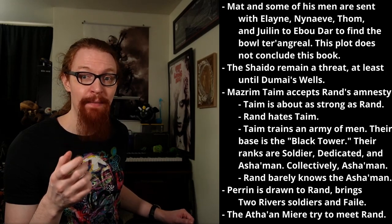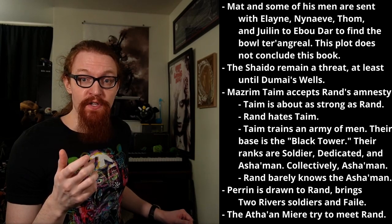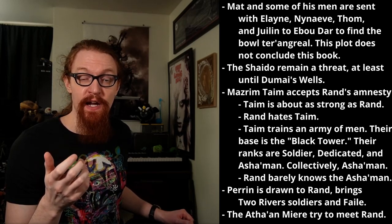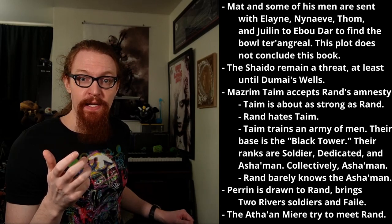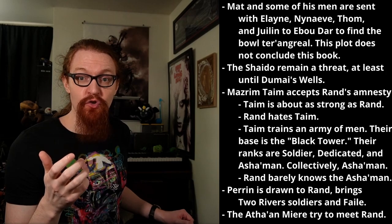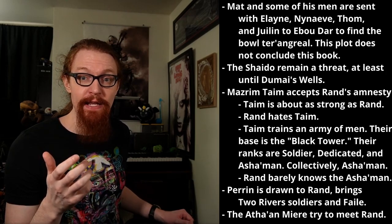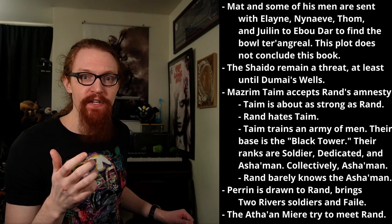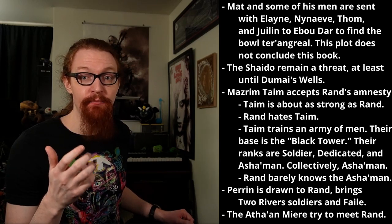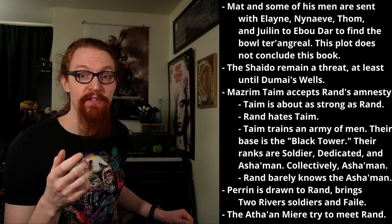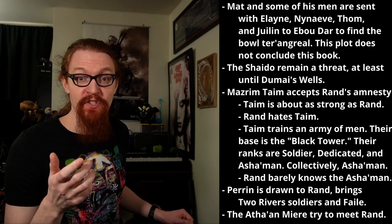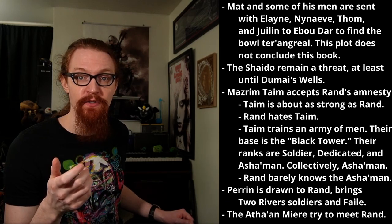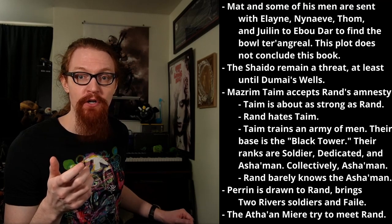The Shaido remain a problem, amassing more forces. The Wise Ones hold that Shaido Wise Ones are still Wise Ones and are welcome among them, though this could change after Sevanna's alliance with Elaida's Aes Sedai. Mazrim Taim accepted Rand's amnesty — Rand charged him with starting a school for men who can channel. Taim is very strong in the One Power, perhaps even as strong as Rand himself, and has many years of experience. He's also a quick study, easily mastering tricks like Traveling. Over the course of Lord of Chaos, Taim amasses hundreds of men and trains them well. Their base is called the Black Tower. They wear black cloaks as uniform, and Rand created badges to mark their ranks: Soldier, Dedicated, and Asha'man — meaning Guardian, or Defender of Truth.